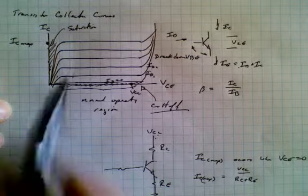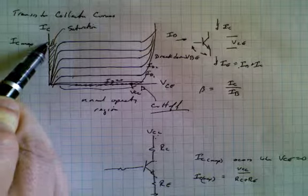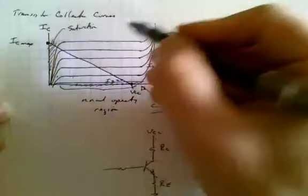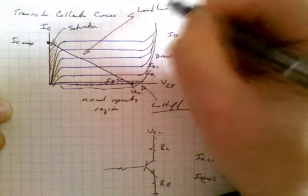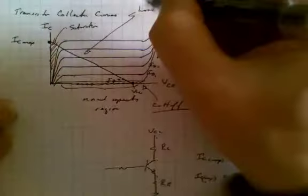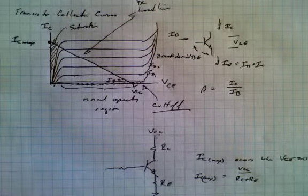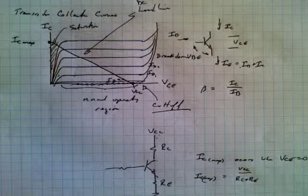Now if we were to join these two lines, what we would have is what's called a load line. And in fact it's called a DC load line. And this shows all the places or operating points where that transistor will work at.